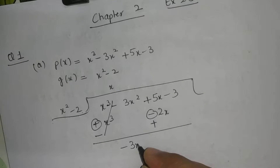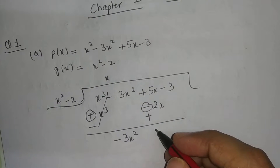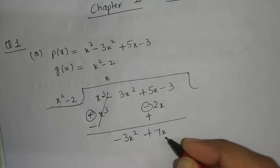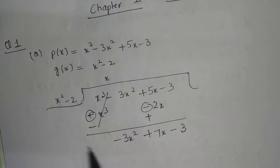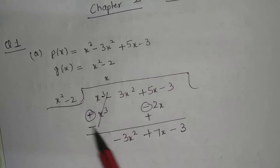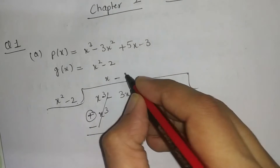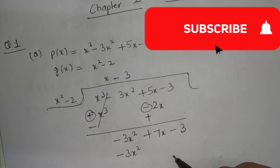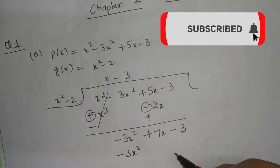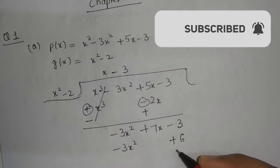This will become minus 3x squared, and plus 5 and plus 2 will become plus 7x minus 3. Now we need minus 3x squared. What do we have? x squared minus 2. So it means we need minus 3. Minus 3x squared will come, and minus 2 into minus 3: if we switch the sign, the sign will come and minus 2. 2 times 3 is 6.